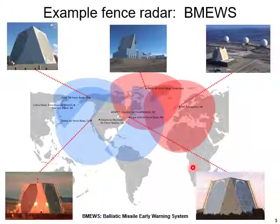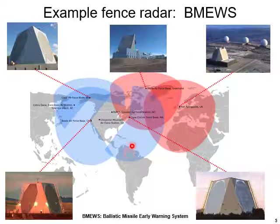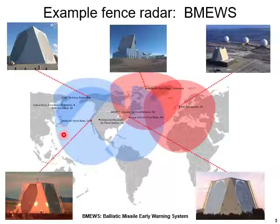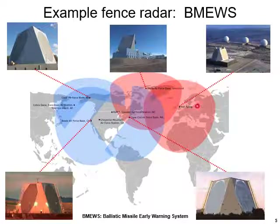Another example is the fencing radar — the ballistic missile early warning system. As you can see, there are big antennas, and each antenna will cover huge geographic locations. That means if some missile comes from another part of the world, this whole system will warn the corresponding country long before the missile actually reaches the target. So this is a kind of fencing system.